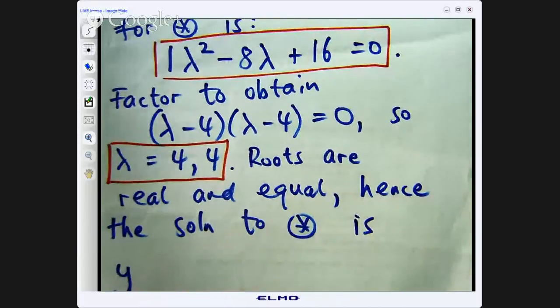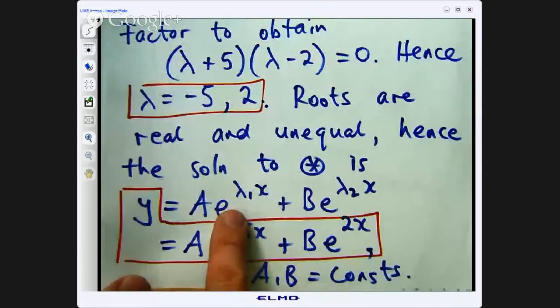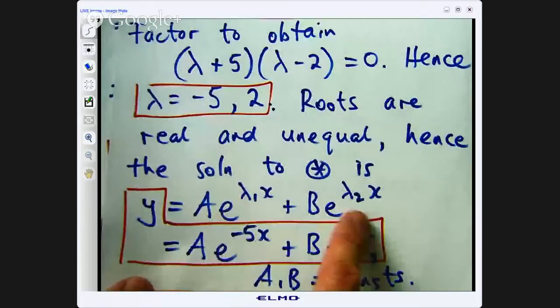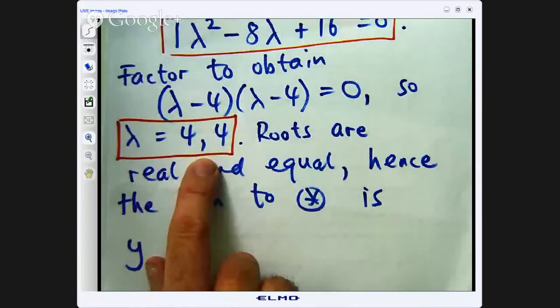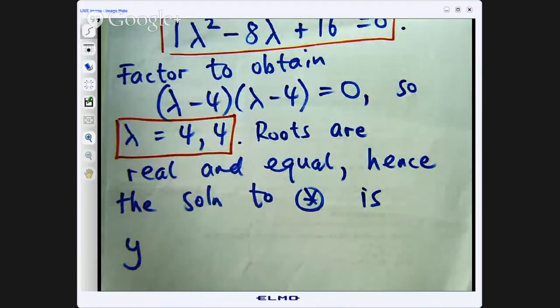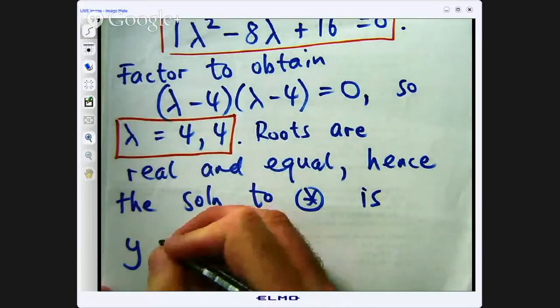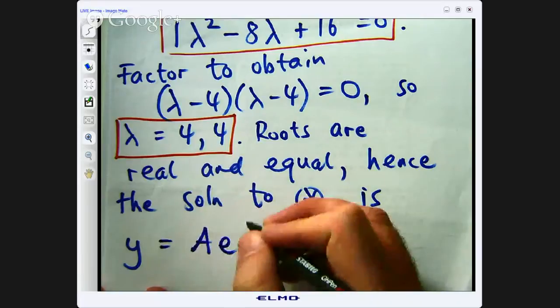Now in a previous video, we looked at this problem and went through the same steps and we got real and unequal roots. So, it's just a combination, what's known as a linear combination of exponentials. It's a bit different here. We still use exponentials, but because our roots are real and equal, we have to insert something into the mix here.